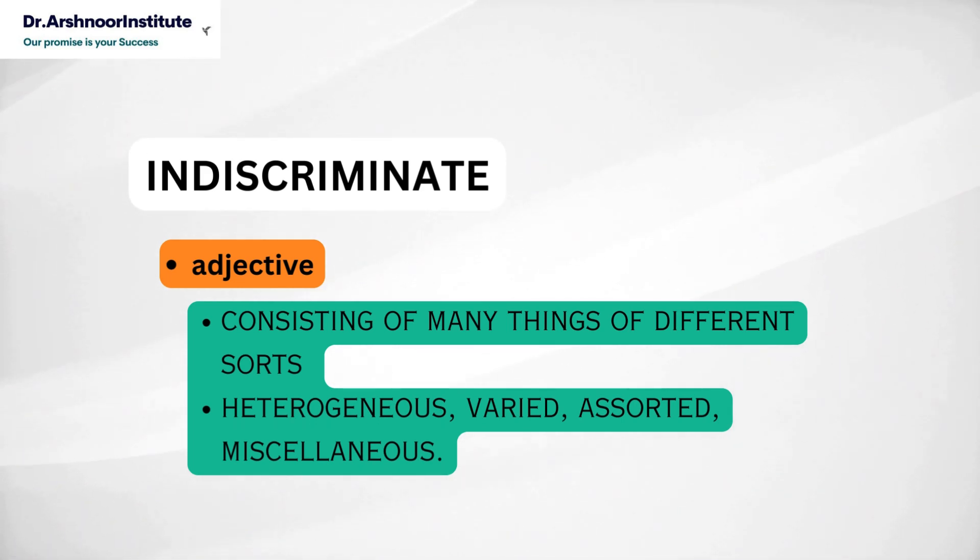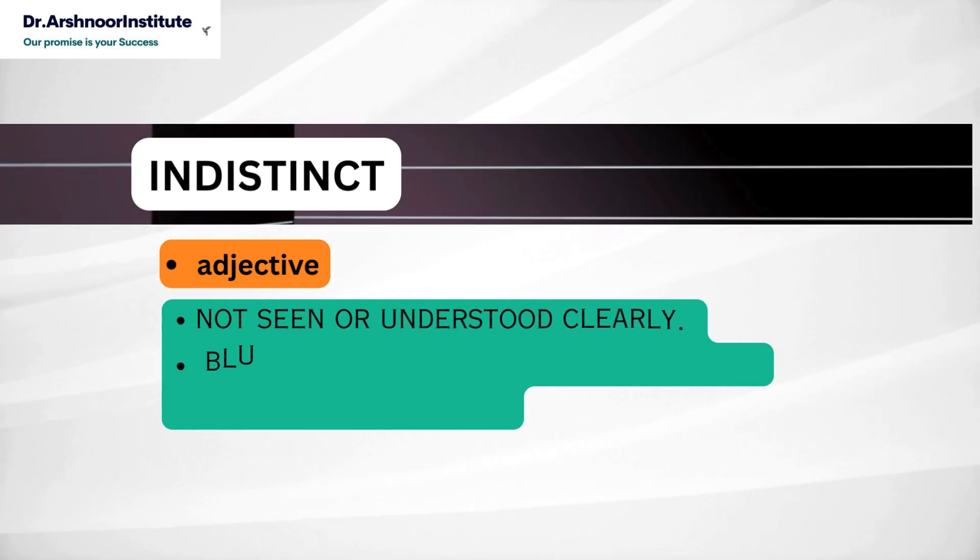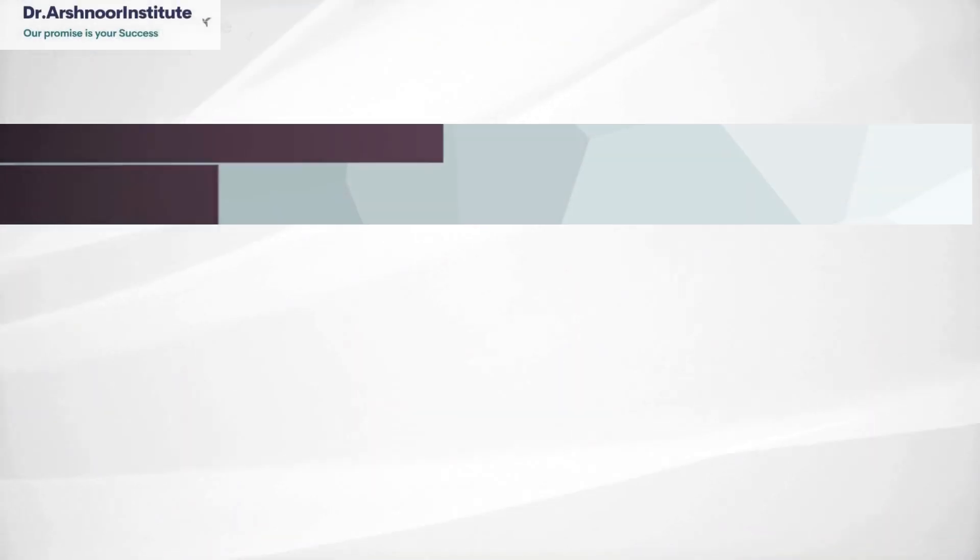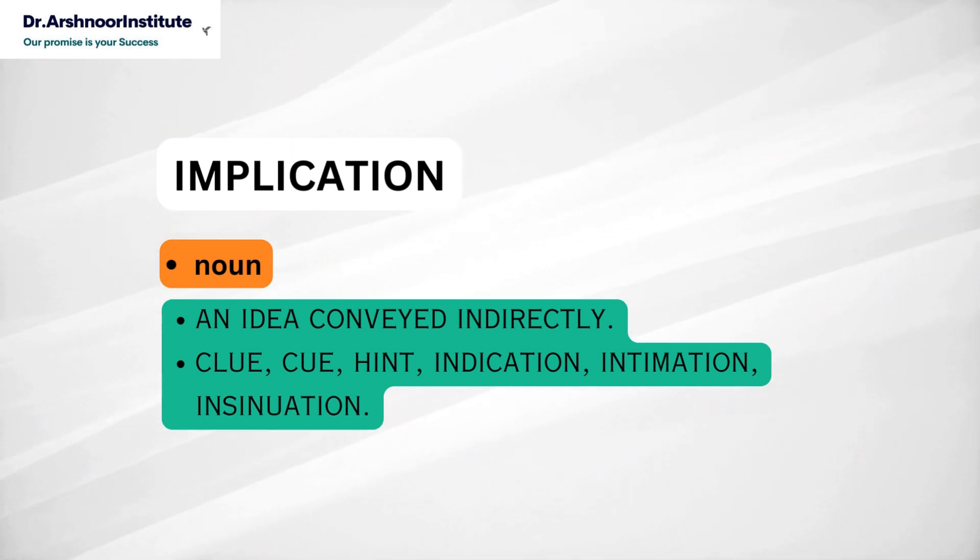Next word is indistinct. It's an adjective. Its meaning is not seen or understood clearly. So its synonyms are blurry, dim, faint, foggy, gauzy, hazy, misty, obscure, dusky. Next word is implication. It's a noun and it means an idea conveyed indirectly. So we can use the synonyms clue, cue, hint, indication, intimation, insinuation.